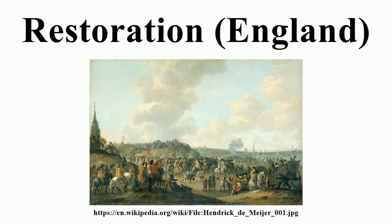The restoration of the English monarchy began in 1660 when the English, Scottish and Irish monarchies were all restored under Charles II after the interregnum that followed the Wars of the Three Kingdoms. The term 'restoration' is used to describe both the actual event by which the monarchy was restored, and the period of several years afterwards in which a new political settlement was established. It is very often used to cover the whole reign of Charles II and often the brief reign of his younger brother James II.